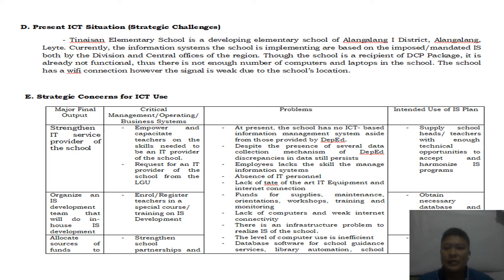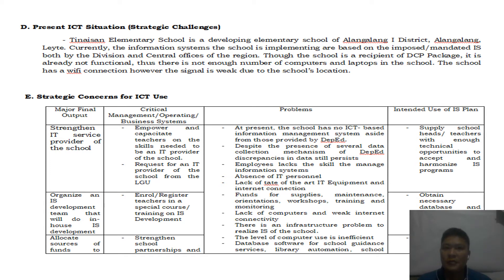The problems at present: the school has no ICT-based information management system aside from those provided by DepEd. Despite the presence of several data collection mechanisms from DepEd, discrepancies in data still persist. Employees lack the skills to manage information systems, there is an absence of IT personnel, lack of state-of-the-art IT equipment and internet connection, and insufficient funds for supply, maintenance, orientations, workshops, trainings, and monitoring. There is an infrastructure problem to realize the IS of the school, and the level of computer use is inefficient. Database software for school guidance services, library information, and other school data-gathering procedures are still not present.